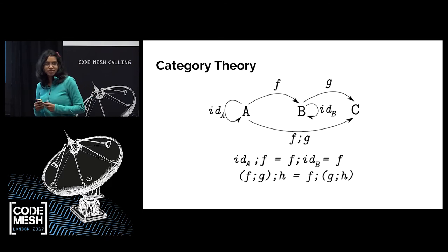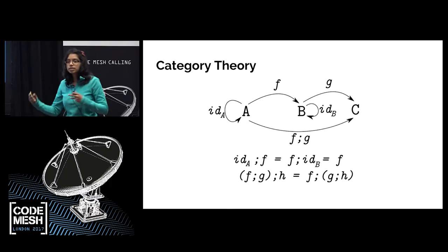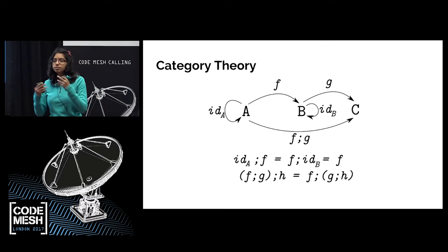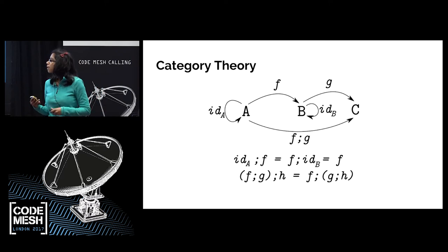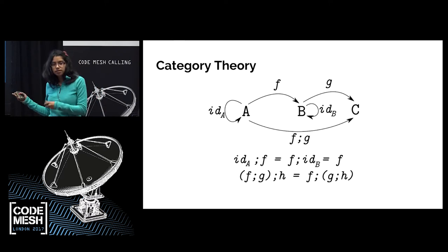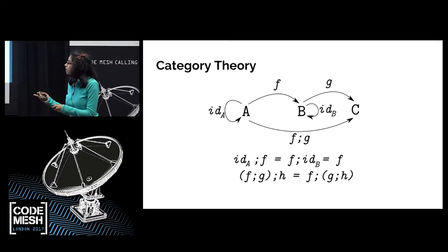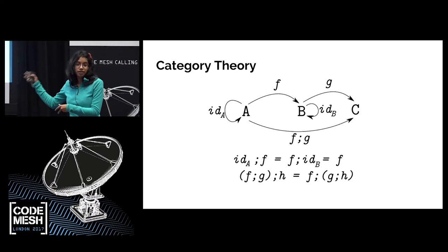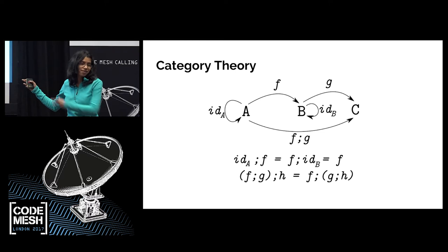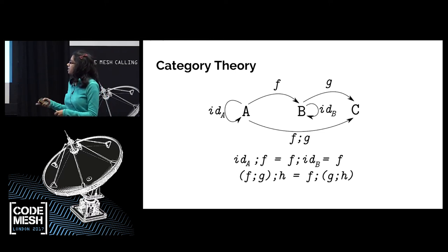Category theory is a very different discipline — a lot more abstract. I'm going to explain what this diagram means. It's basically the whole of category theory. If you understand this diagram, you've understood the whole field. It deals with composition.